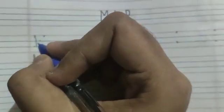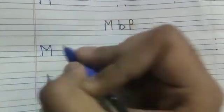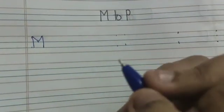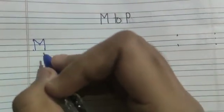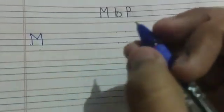How to make M. Make a standing line, slanting line, slanting line, standing line. M. Emma Mango. Emma Man. Emma Marigold. M.